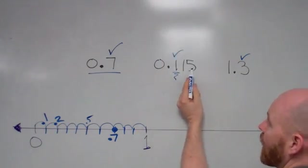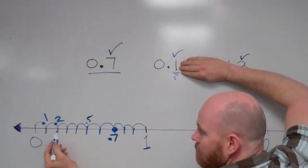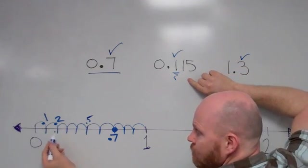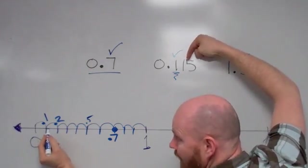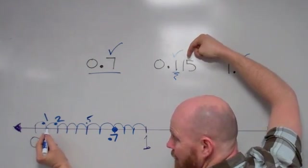So 0.115, because of this 1 right here, means I'm going to be, this number is going to be located somewhere between these two places right here. This 1 means I'm going to cut from 0.1 to 0.2 into 10 equal-sized spaces.